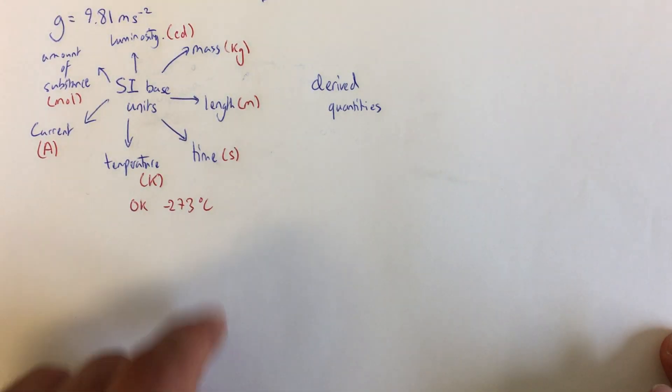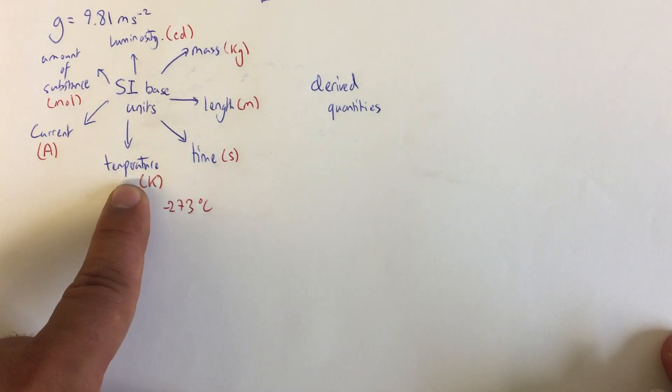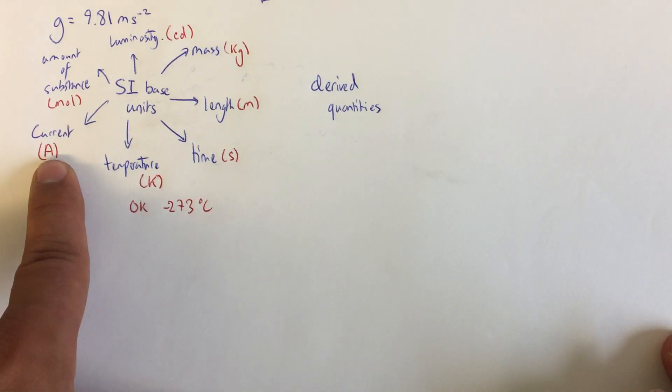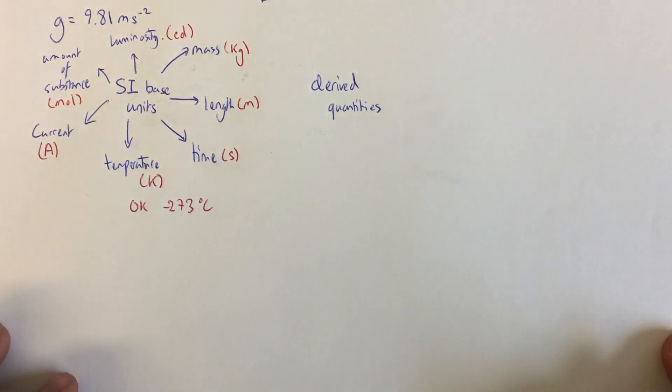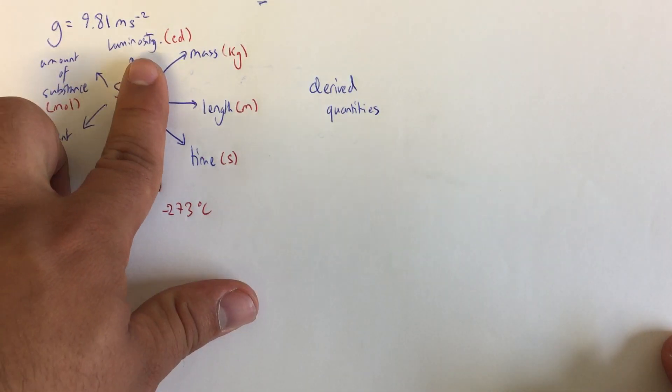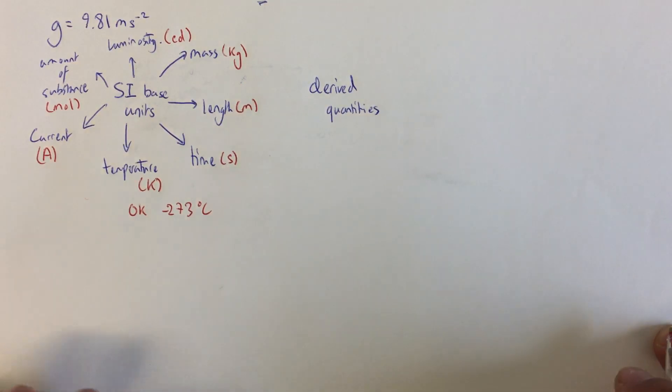For the first module, these three will be the most important. As you go into year 13, we'll look more at temperature, and when we do electricity, we'll look at current. Again, year 13, we look at amount of substance quite a lot when we do gases. Luminosity is the one we talk about the least, and the fact that it is a candela is what you really need to know.